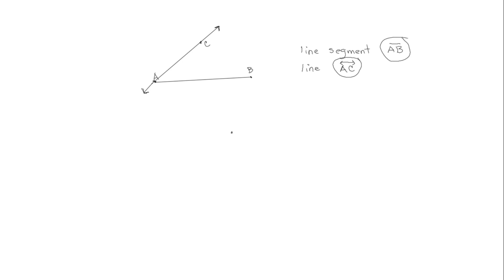Now we're going to find another point — we'll call this one D. This time we're going to start at point B, extend it through D and keep going, and draw an arrow here. So this is called a ray. A ray has an endpoint but it continues infinitely in one direction. We indicate this as ray BD, drawing a line with one arrow. Notice the difference in the symbols: the line segment has no arrows, the line has two arrows, and the ray has one arrow.